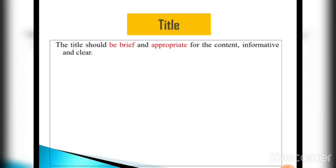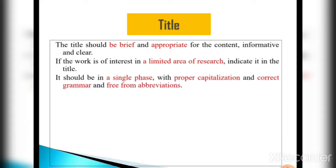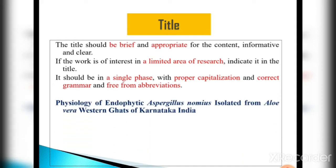First, the title. A title should be brief and appropriate for the content — informative and clear. If the work is of interest in a limited area of research, indicate it in the title. It should be in a single phrase with proper capitalization and correct grammar, and free from abbreviations. For example: 'Physiology of Endophytic Aspergillus nomiae Isolated from Aloe vera, Western Ghats of Karnataka, India.' This title is brief, appropriate, informative, mentions the limited area of research, uses a single phrase, proper capitalization, correct grammar, and is free from abbreviations.